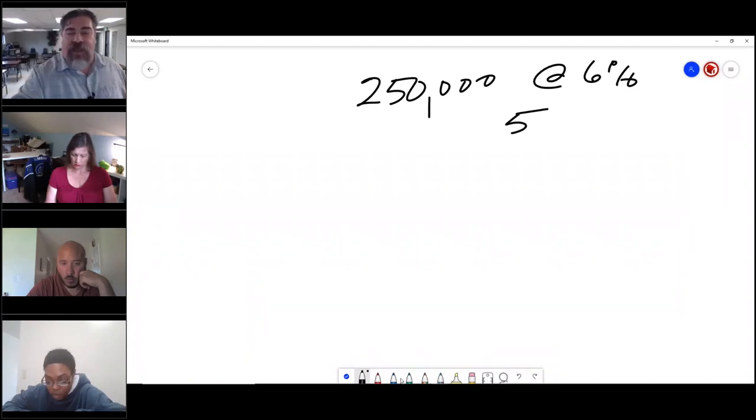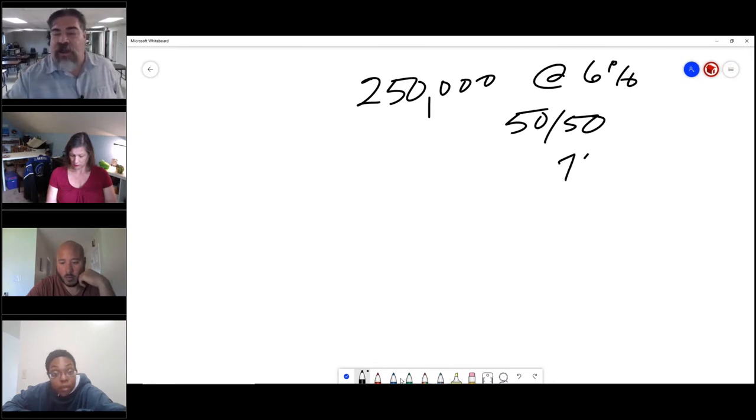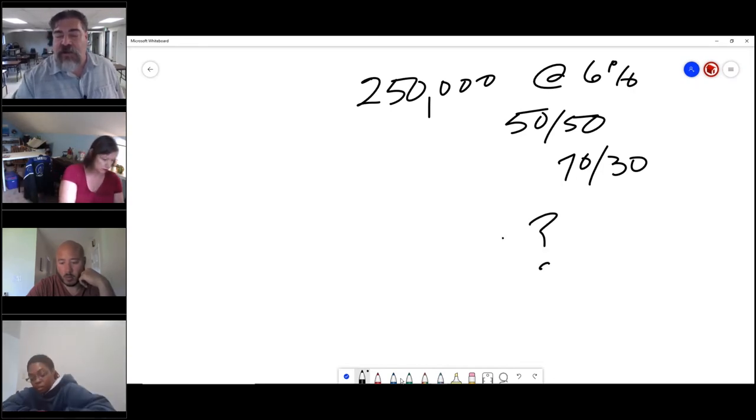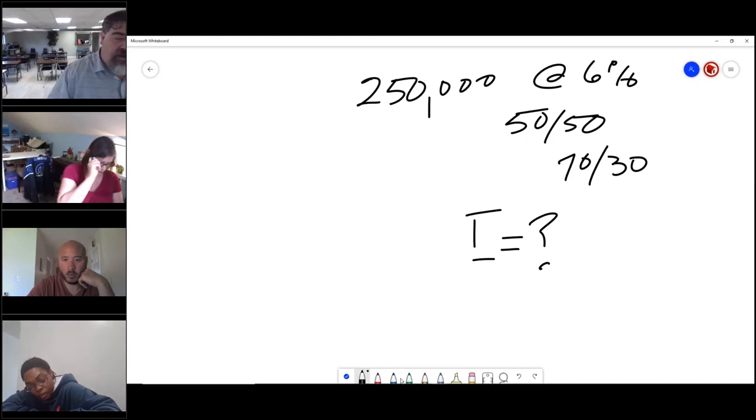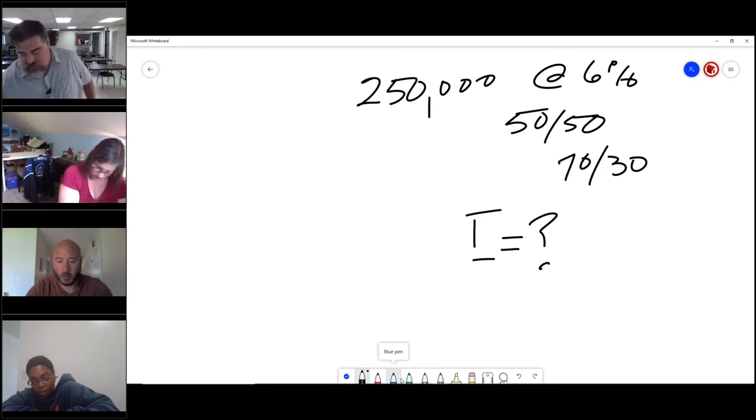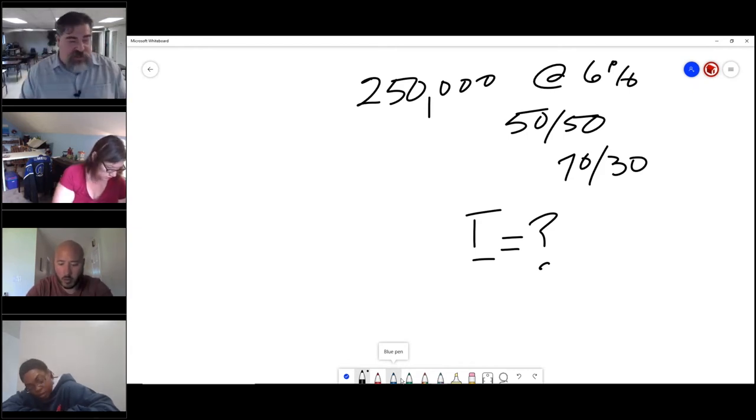The scenario is a $450,000 sale with a 6% commission that is being split 50/50 with the buyer side, and you are my agent and we are on a 70/30 split. My question is, how much did I earn in this deal? Somebody's calculator is going fast.